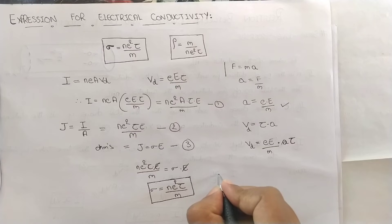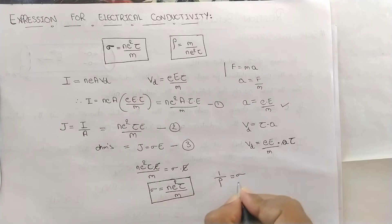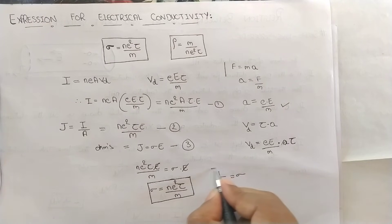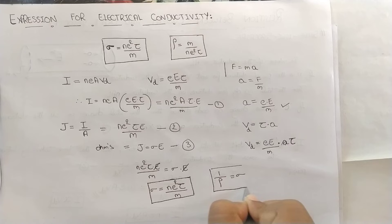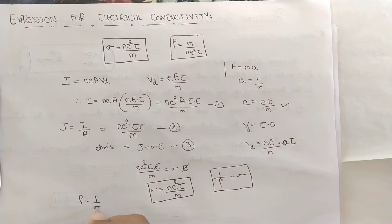This is the expression for electrical conductivity. As you all know, electrical conductivity is nothing but reciprocal of electrical resistivity. Reciprocating the obtained electrical conductivity will give you electrical resistivity. That is, sigma equals 1 by rho will give you M by N E square tau.